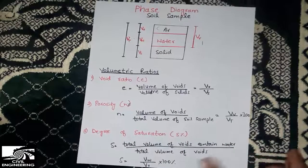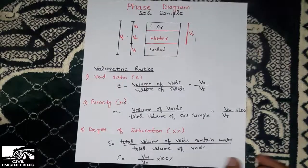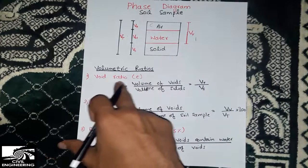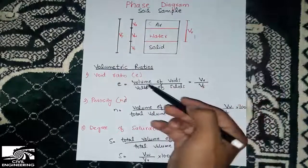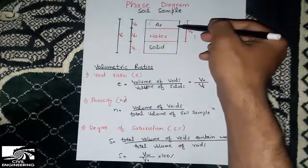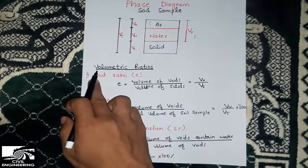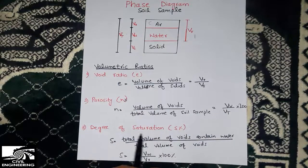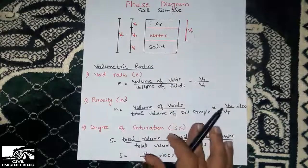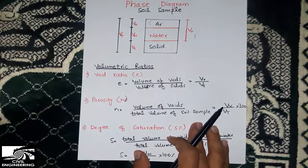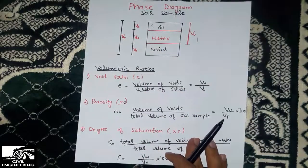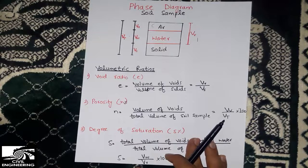This was all about the phase diagram of the soil sample. This terminology is very important — the void ratio tells us how much voids are present in terms of ratio, porosity tells us in terms of percentage, and similarly we know about the degree of saturation. If you have any questions you can comment and we will get back to you very soon. We are also uploading more topics related to soil mechanics engineering. Please subscribe to our channel for more videos. Thank you.